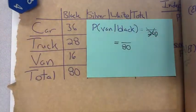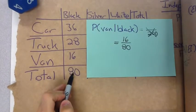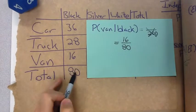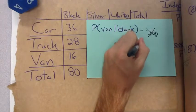Given that it's black, we've eliminated silver and white. If it's black, how many of them are vans? There are 16 of them that are black. So a van given that it's black is 16 of the 80, which becomes 1 fifth.